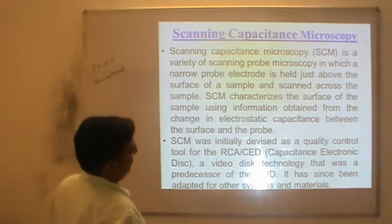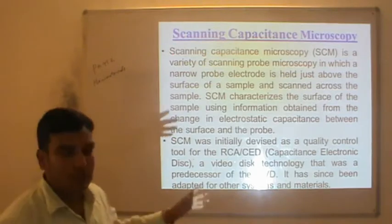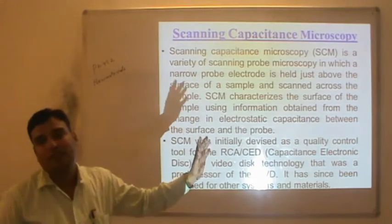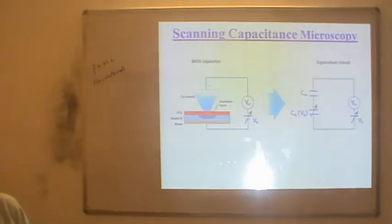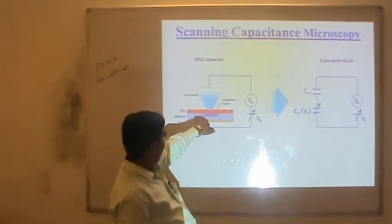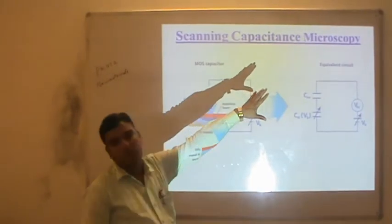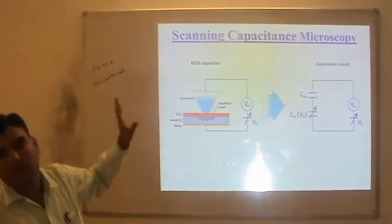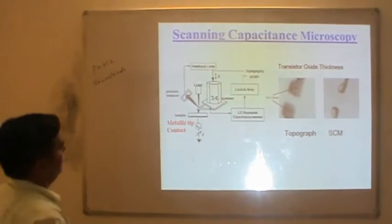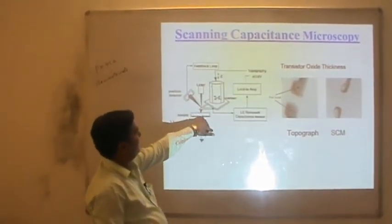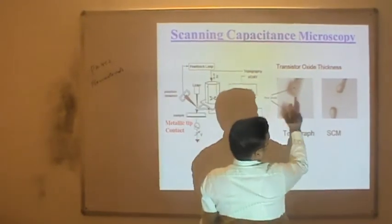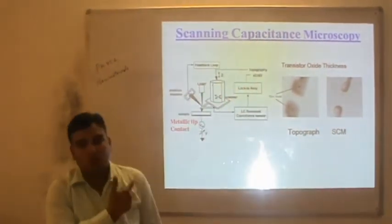SCM was initially devised as a quality control tool for RCA CAD — Capacitance Electronic Disc. The working principle is: by measuring the capacitance developed between the sample and the electrostatic or electrical circuit, you can get information about the sample and its behavior. This is the material tip in contact with the sample — the electronic devices give information about both the topographic image and the scanning capacitance microscopic image.